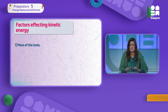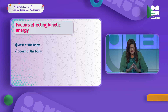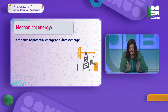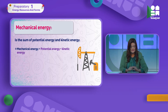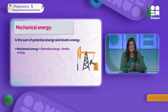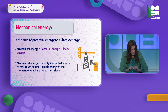Remember: factors affecting kinetic energy are mass and speed — that's why the formula is ½mv². Mechanical energy is the sum of potential energy and kinetic energy. Mechanical energy = PE + KE. All of these are measured in joules.